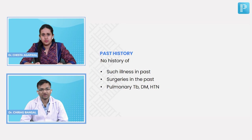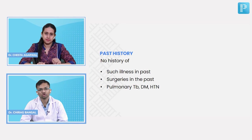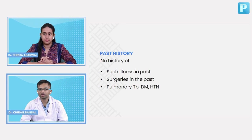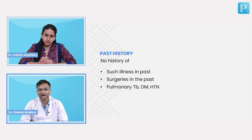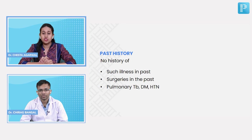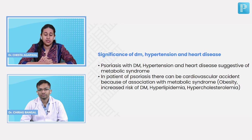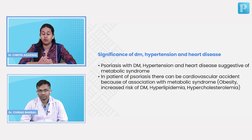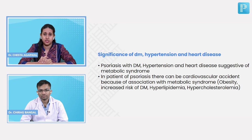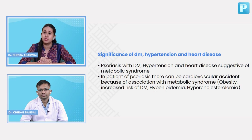Moving on to past history: no history of similar illness in the past, no surgeries, and no history of pulmonary tuberculosis, diabetes mellitus, or hypertension. Do you have any significance of systemic features here — involvement of the heart, blood pressure, diabetes, hypertension — in this particular patient?